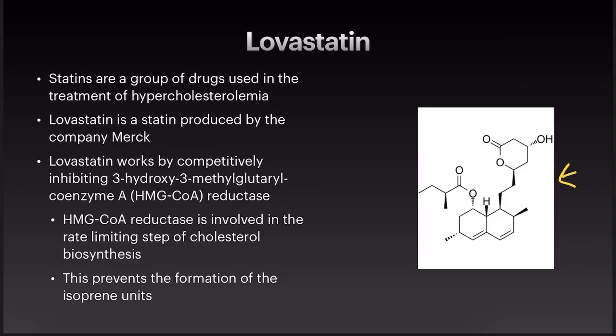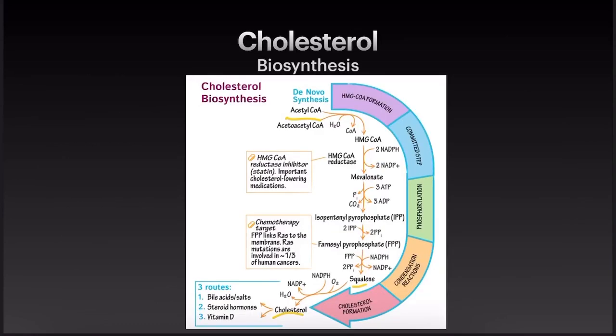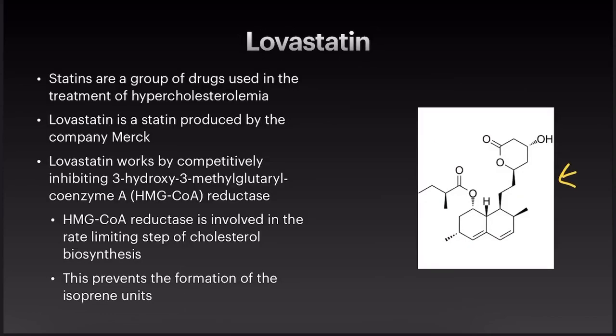Lovastatin works by competitively inhibiting HMG-CoA reductase — 3-hydroxy-3-methylglutaryl coenzyme A reductase. HMG-CoA reductase is the enzyme involved in the rate-limiting step of cholesterol biosynthesis. Without this reductase, HMG-CoA will not be converted into mevalonate, and the cholesterol backbone cannot be produced, so cholesterol isn't going to be made as readily. This is why statins are important cholesterol-lowering medications — they prevent the formation of the isoprene units.